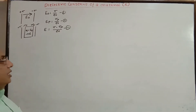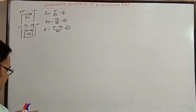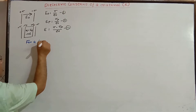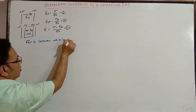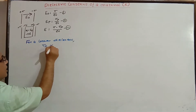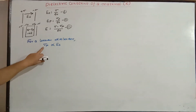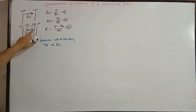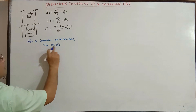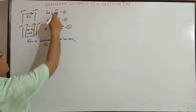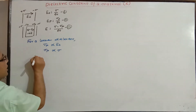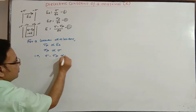For a linear dielectric, σₚ is proportional to E₀. Since E₀ is proportional to σ, we can also write σₚ is proportional to σ. From these two, mathematically we can also write that σ minus σₚ is proportional to σ.